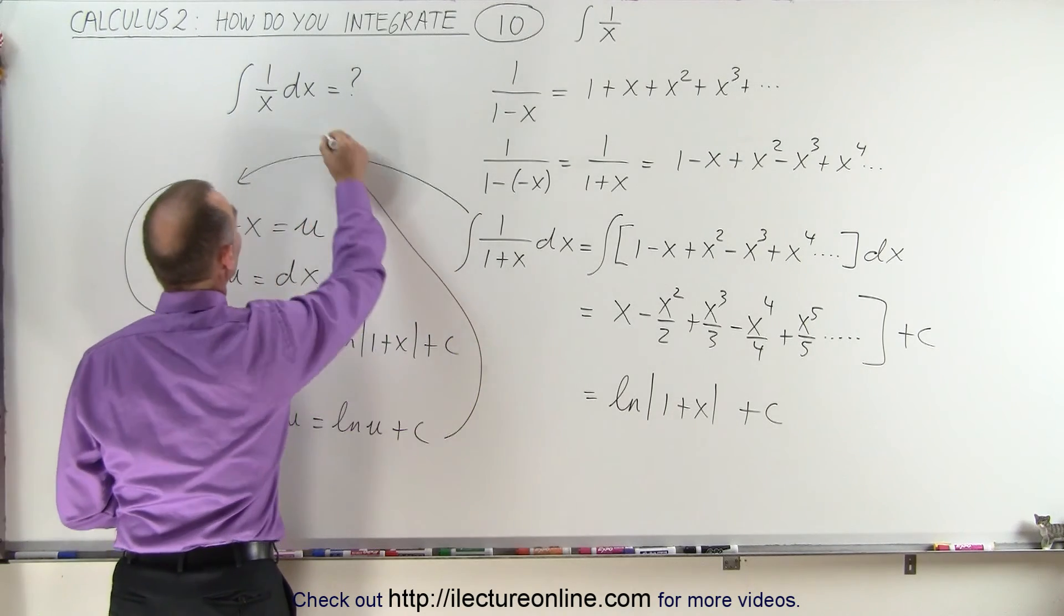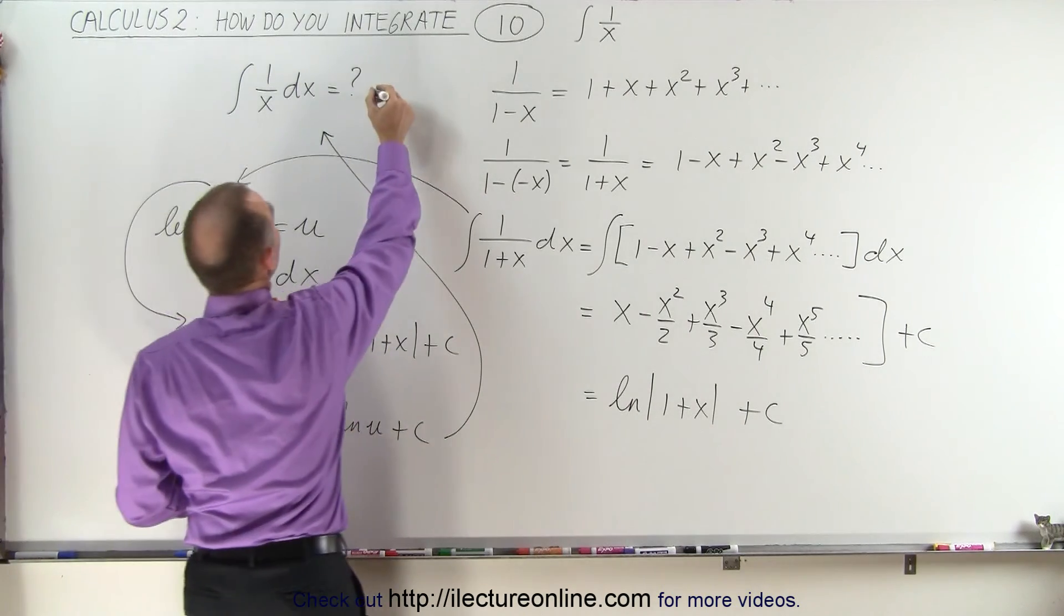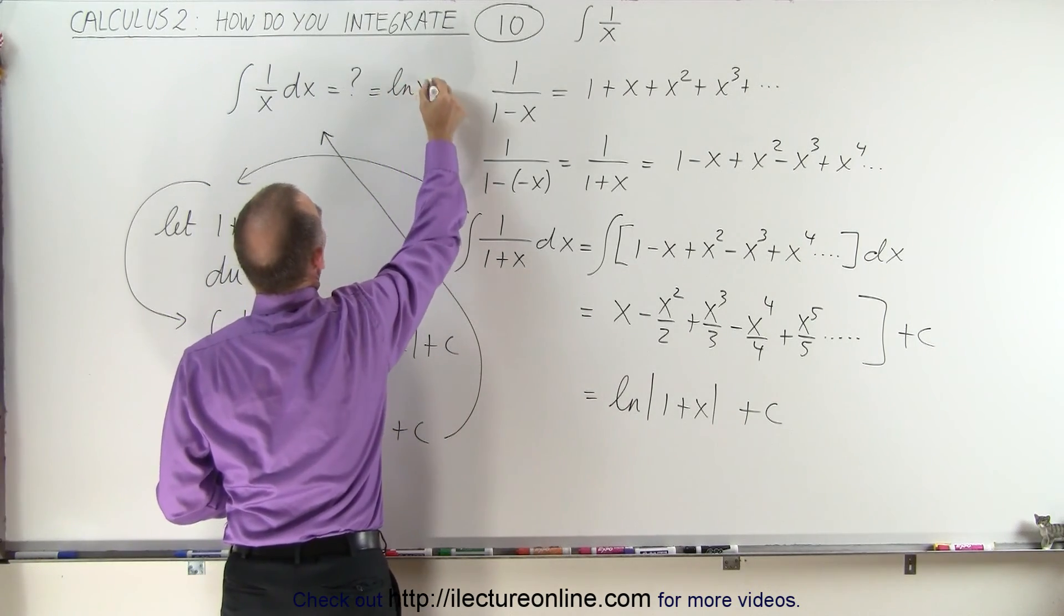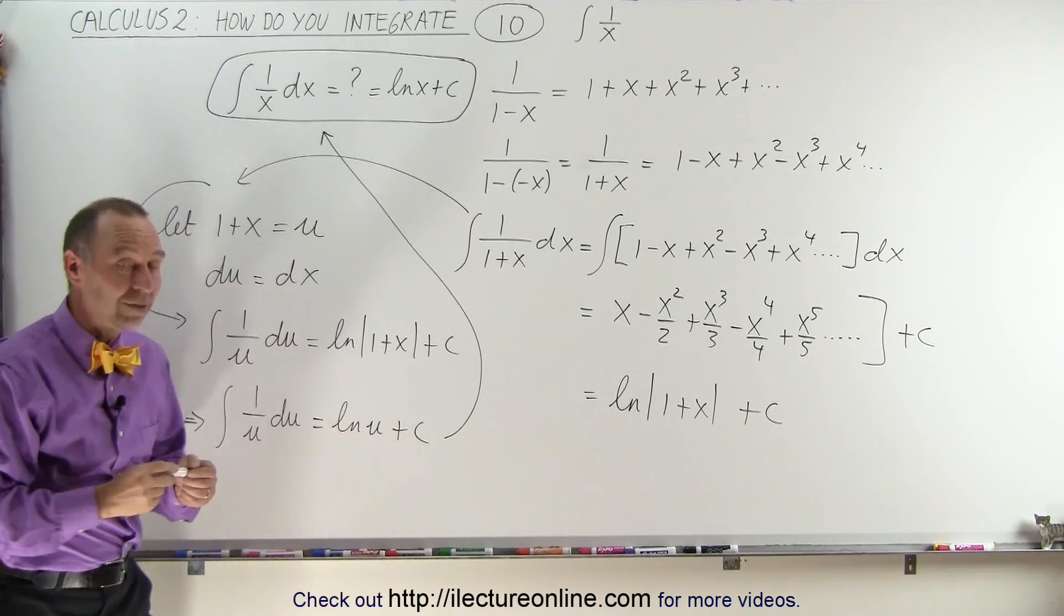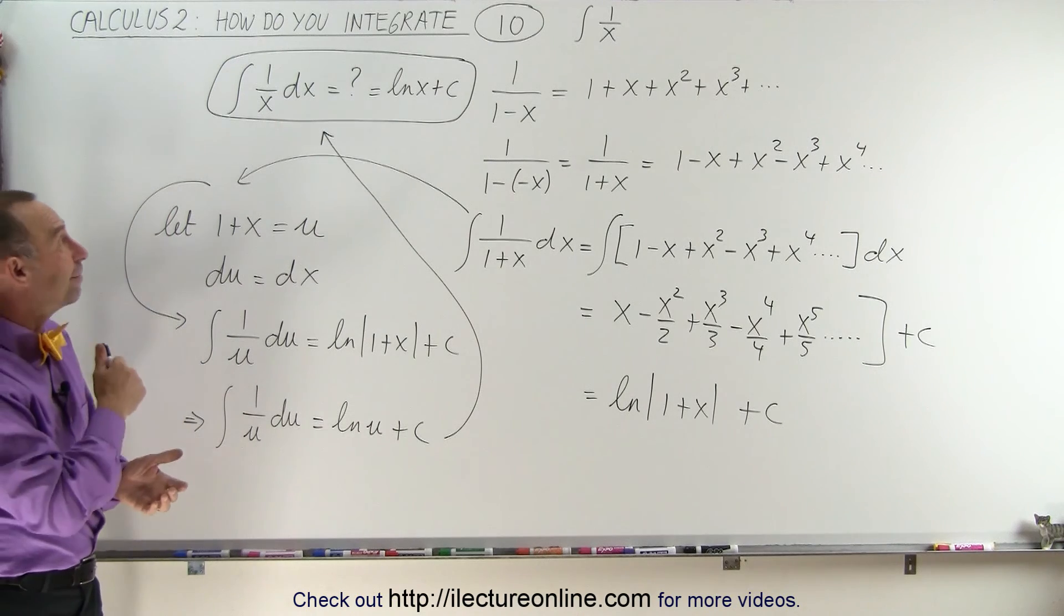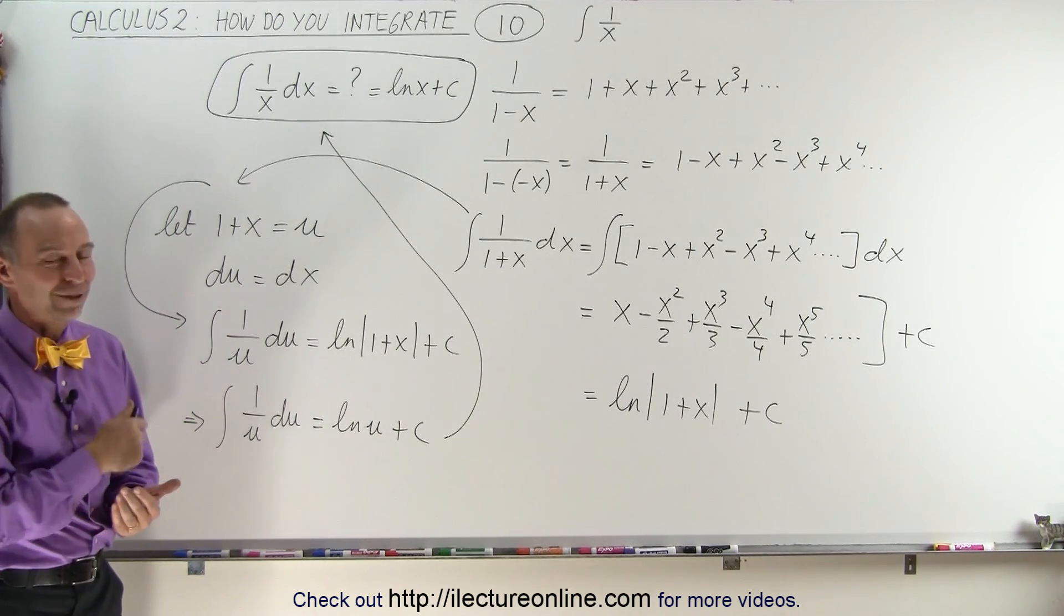Which means that, going back over here, the integral of 1 over x dx must indeed be equal to the natural log of x plus a constant of integration. And that's one way in which we can see that the integral of that is indeed equal to the natural log of x plus a constant. And that's how it's done.